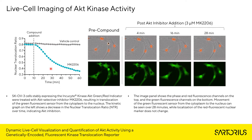The kinetic graph on the left shows a decrease in the nuclear translocation ratio, or NTR, over time indicating AKT inhibition. The red nuclear-restricted protein remains in the nucleus and does not change over time. As you can see in the image panel across the top, that red nuclear protein stays in the nucleus even after the MK2206 addition. This is primarily used to indicate the nuclear-cytoplasmic boundary in our masking paradigm.